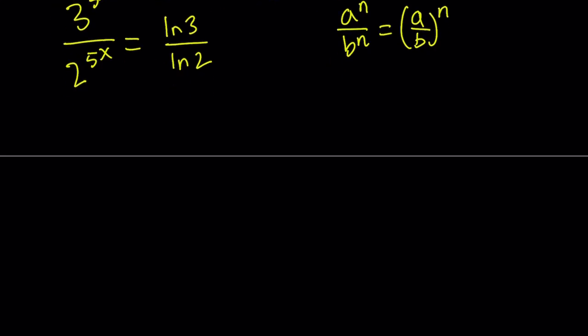So now, since they have the same exponents, we can write this as 3 over 2 to the power 5 to the power x equals ln 3 over ln 2. Great. So we still have an exponent, and that exponent has an exponent.